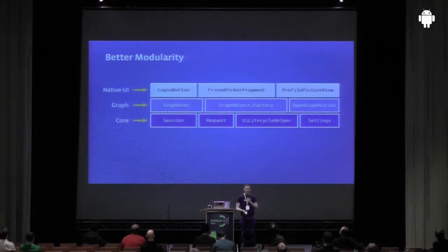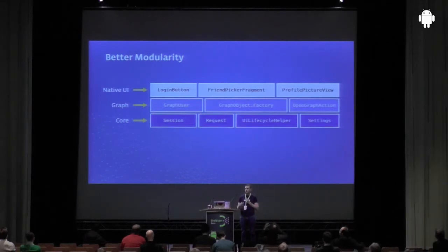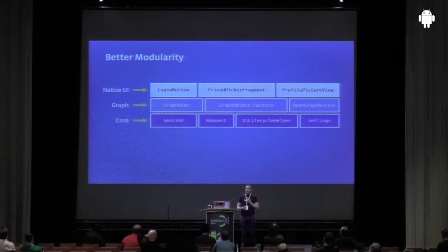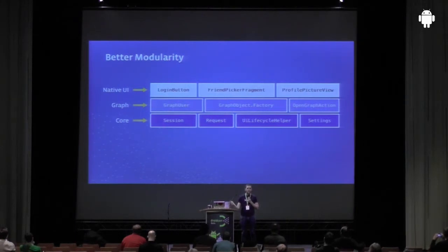We have a bunch of native UI features on top of that. There's a login button which just handles session without you having to do anything yourself — you just drop that button into your activity and it'll manage your login, pop up the dialogue for permissions. Then there are helper fragments for picking friends, so if you want to build a share dialogue to specific friends or launch a game to friends, the friend picker fragment does that without you having to build the UI yourself. And there's a profile picture view — once you've got a logged-in session, it'll just update with your profile picture.